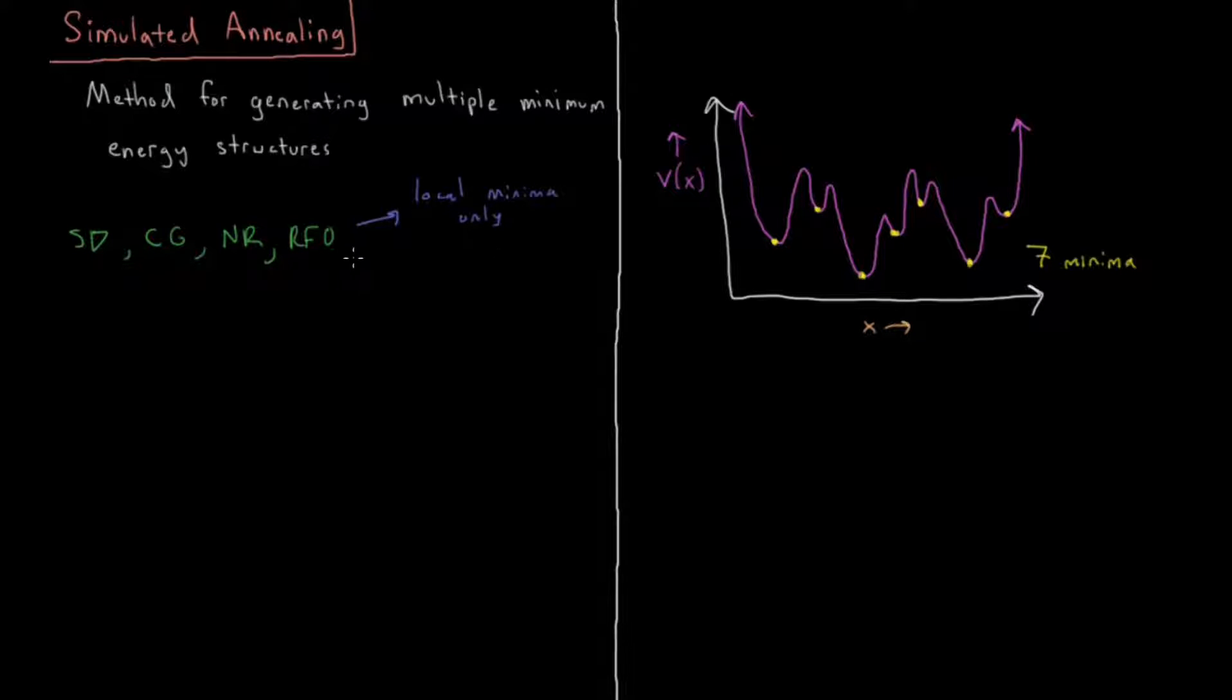Another problem, or well not really problem, just property, is that they are deterministic. That's usually a very good property. Deterministic means every time you do it, you'll get the same result.